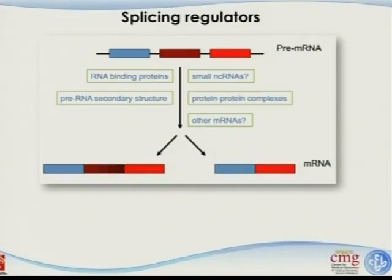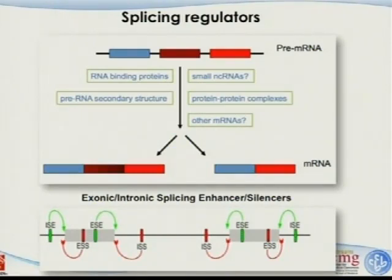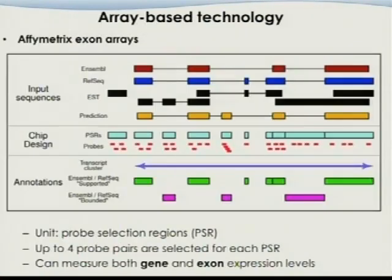When studying alternative splicing, the splicing patterns are complex and can have phenotypical effects. Regulators include RNA binding proteins, RNA secondary structures, and cis-acting RNA elements on exons and introns — some promoting splicing (ESE, ISE: exonic/intronic splicing enhancers) and others inhibiting it (ESS, ISS: exonic/intronic splicing silencers). RNA binding proteins bind somewhere in the pre-cursor mRNA and regulate splicing.